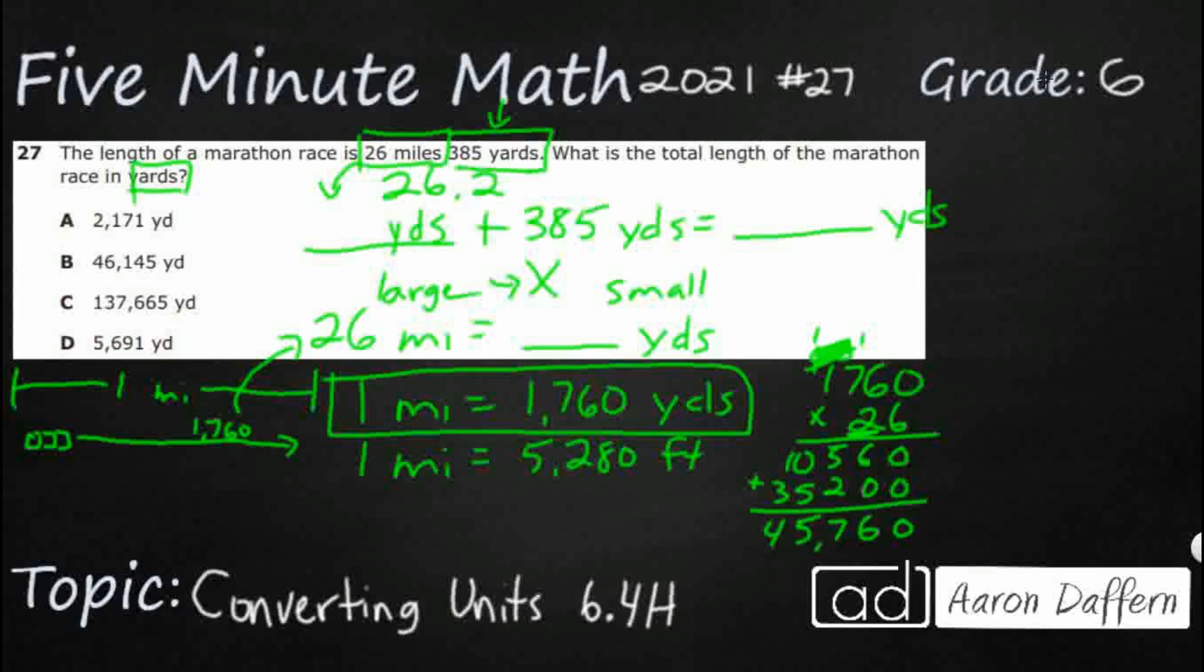So it looks like I've got 45,760 and you're thinking, oh I'm close, this kind of works here, maybe I just messed it up. But remember our original, we had to do our 26 miles into yards. Remember we had that 385 yards left over? So now we need to add those two back up.